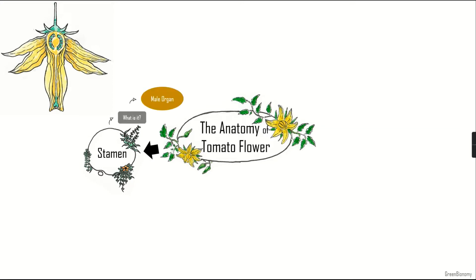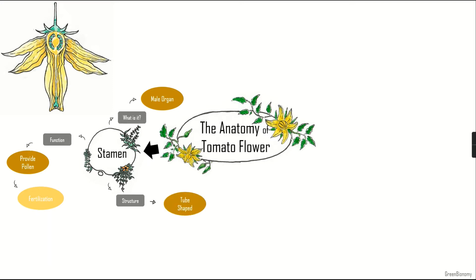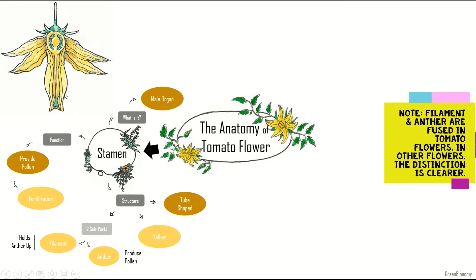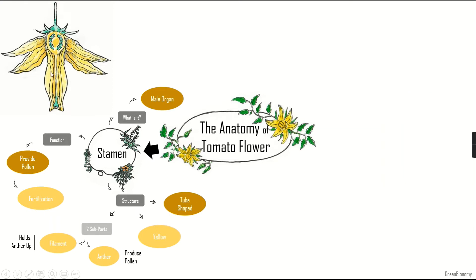The first part is the stamen — the male organ of the flower. Its function is to provide pollen which will lead to fertilization. The stamen is tube-shaped and yellow. It has two sub-parts: the filament, which holds the anther up, and the anther, which is the part that produces the pollen. In the illustration, the curvy yellow tubes are the stamens. There are many stamens in the tomato flower surrounding the female organ.